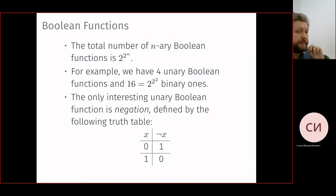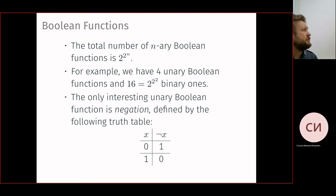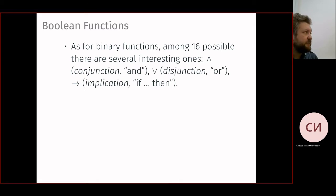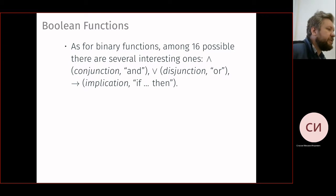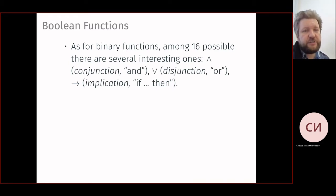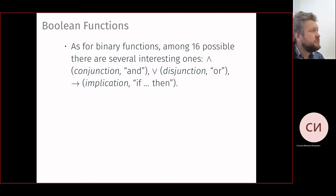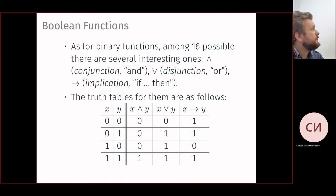The only interesting unary Boolean function is negation, which flips the value. The others are constant zero, constant one, and identity. For binary functions there are 16 possible ones. Several interesting ones correspond to standard logical operations: conjunction (AND), disjunction (OR) — which is non-exclusive: if both are true, OR is also true — and implication (if-then).